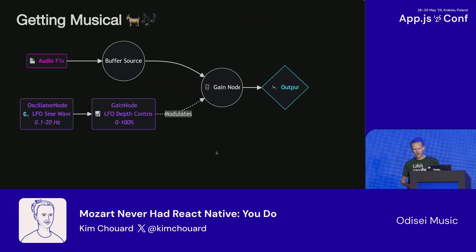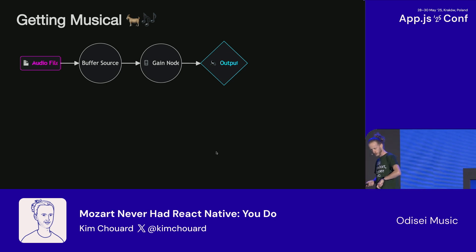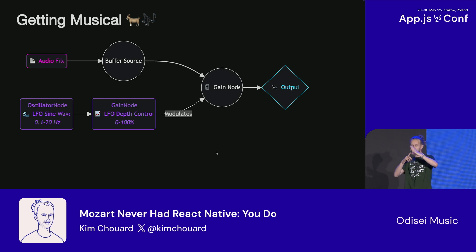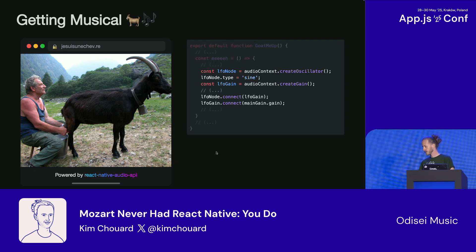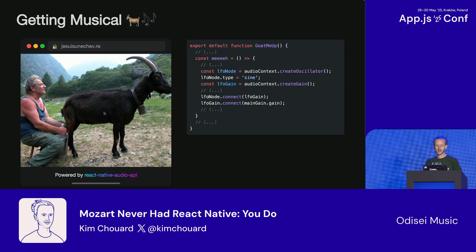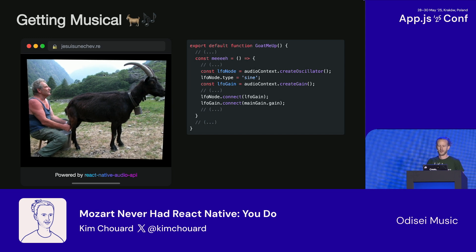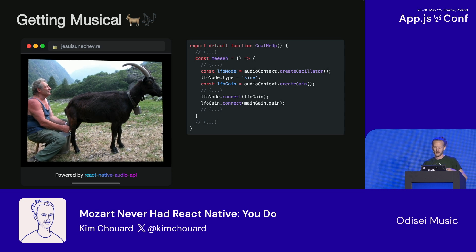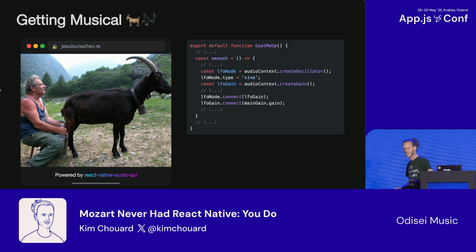Let's spice this up. You can program a volume oscillation — like a bad DJ going up and down on the volume knob. You use an oscillator, a waveform that goes up and down, change the frequency so it goes faster or slower, and connect the gain node to it so the volume goes up and down at different rates. You can get Skrillex-style stutter sounds, or connect it to a low-pass filter. There's a lot you can do. I think we've heard enough goat sounds for this presentation.